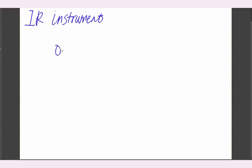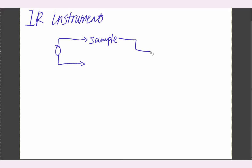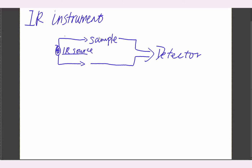Now we have the basic background knowledge. We go to the measurement instrument. Previously, the old IR instrument would generate IR radiation and separate it into two beams — one passing through the sample and the other used as a reference. Then the detector would define the difference between these two and generate a spectrum.